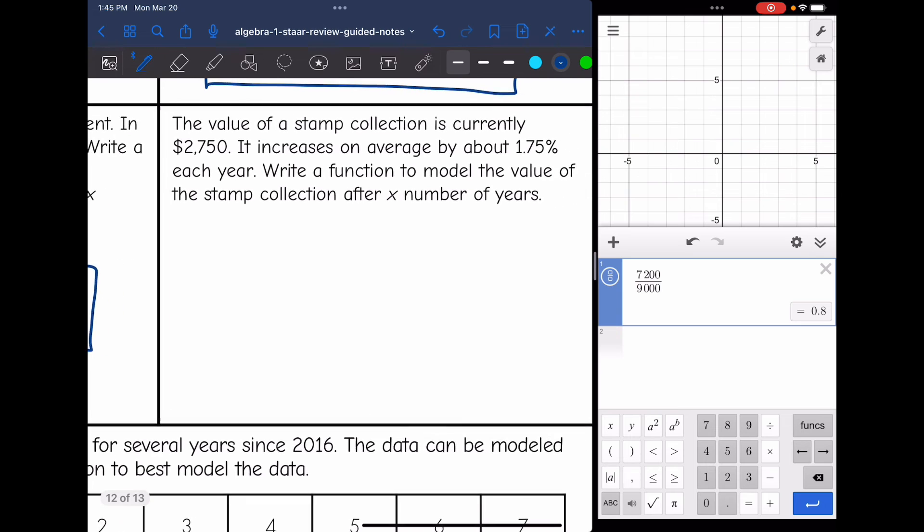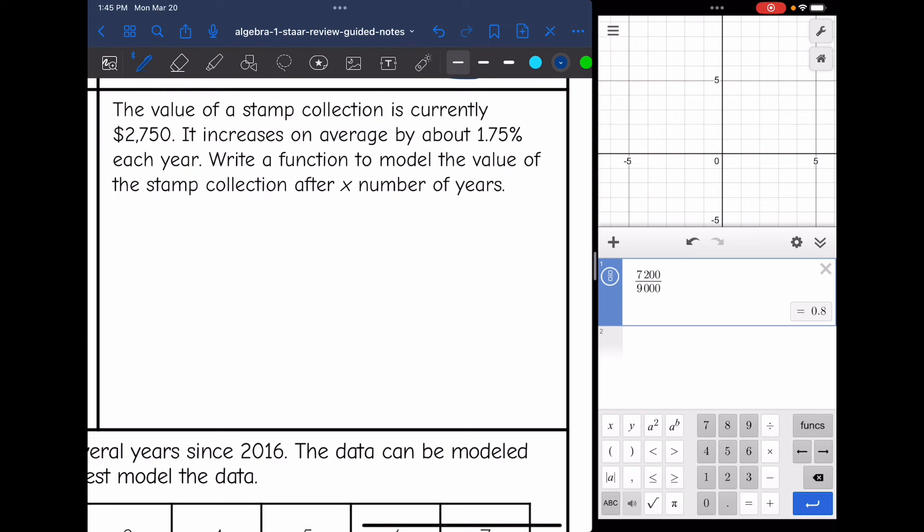All right, next one says the value of a stamp collection is currently $2,750. It increases on average by about 1.75% each year. Write a function to model the value of the stamp collection after x number of years. So the initial value would be what it's worth currently, which is $2,750. And then my growth or decay rate...